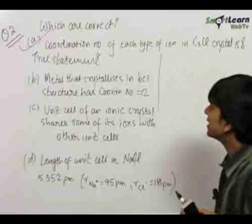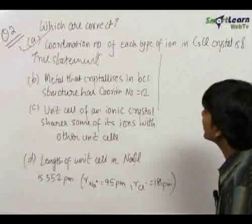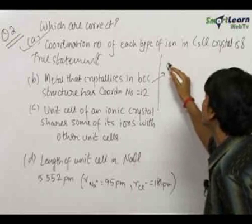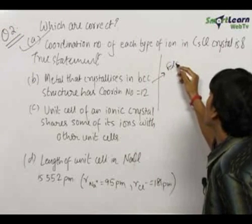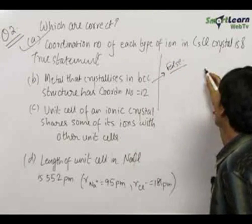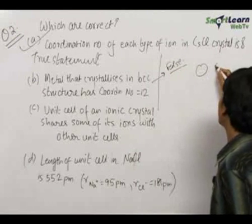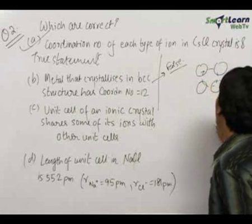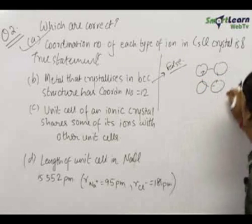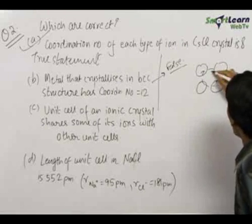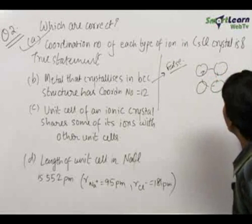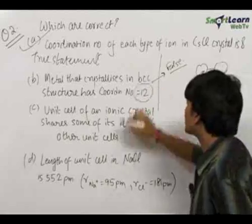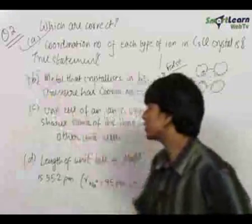For option B, it is written that a metal that crystallizes in BCC structure has a coordination number equal to 12. This is completely false, because as we have just seen in a BCC structure, even when the atom is the same type, it will touch only 8 atoms. Therefore, a coordination number of 12 is not possible in BCC, and this statement is false.